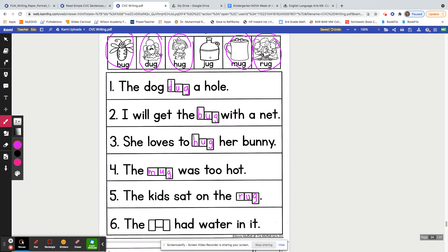And the last one, the, what is this? Jug had water in it. And that makes sense because J is a worm line letter and G is a worm line letter. J, U, G, J-U-G. The jug had water in it.